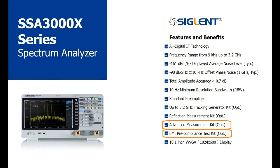The final option I'd like to cover today is the tracking generator. A tracking generator is a swept RF source that follows the analyzer frequency steps. It's typically used to test filters, amplifiers, and cables.